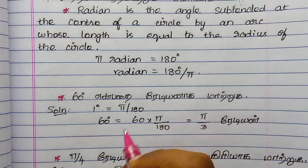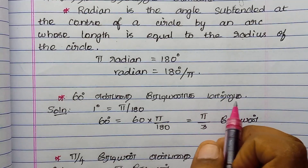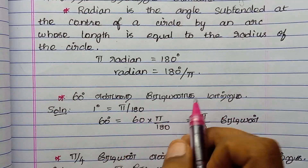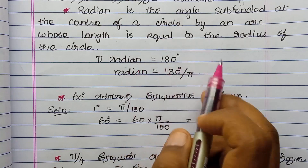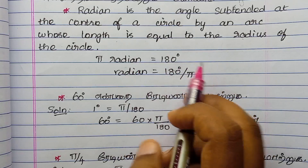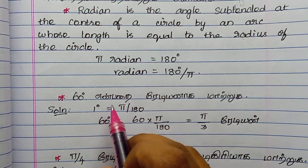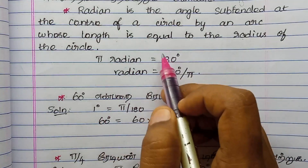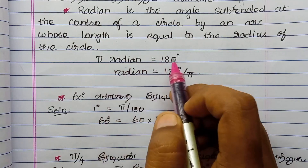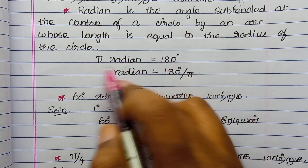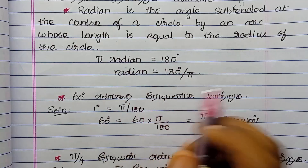So 60 degrees equals π/3 radians, since π radians equals 180 degrees. We can write: 1 degree equals π divided by 180. So 60 degrees gives us π by 3 radians. Then we get π by 4 radians for 45 degrees.